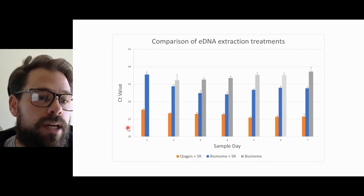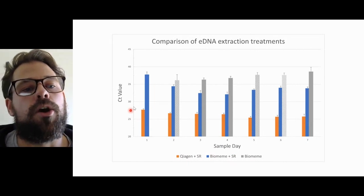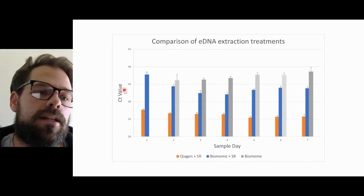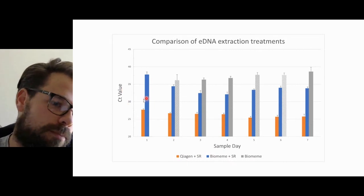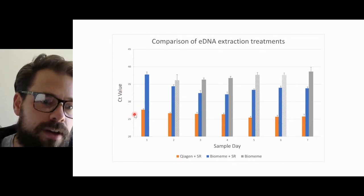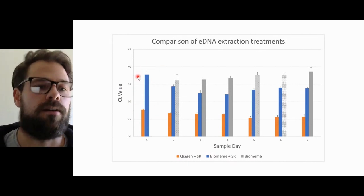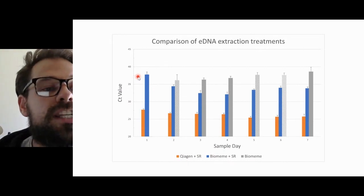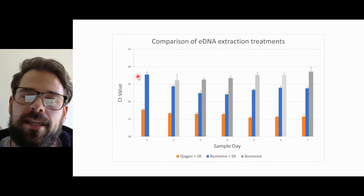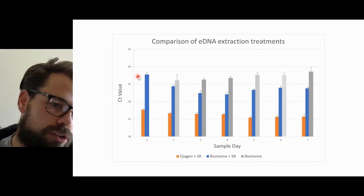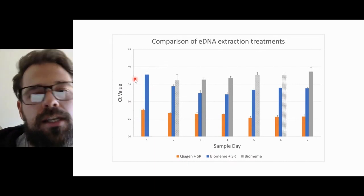A lower CT value indicates a really high DNA concentration, and as CT value goes up we're losing that DNA concentration in the sample. For example, our Qiagen kit had a CT value of about 27, but the Biomeme kit had a CT of about 37 — that's about a thousand-fold difference in DNA concentration to start with. So right out of the gate, even just using a simple extraction method, you can see that concentration-wise this is going to cost us a lot in sensitivity.